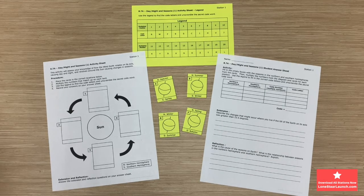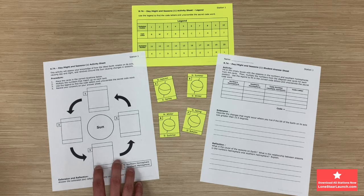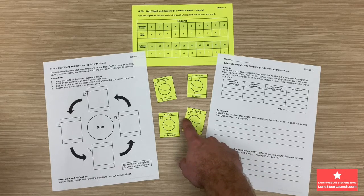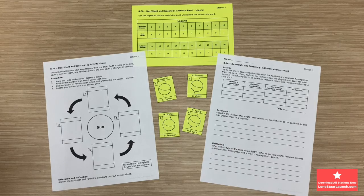Let's look back at the activity sheet. Students will be given four cards containing diagrams and seasons in the northern and southern hemispheres. They'll have to match the cards to the correct locations on the chart provided.